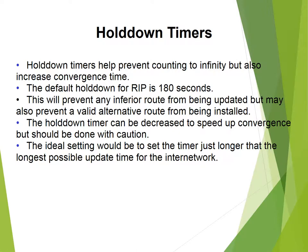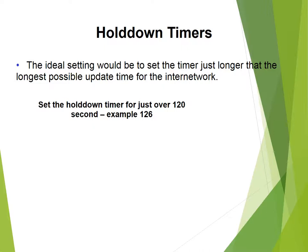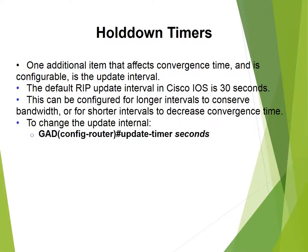The hold-down timer helps prevent counting to infinity but also increases convergence time. The default hold-down for RIP is 180 seconds, which prevents any inferior route from being updated but may also prevent a valid alternative route from being updated. The hold-down timer can be decreased to speed up convergence, but this should be done with caution. The ideal setting is to set the timer just longer than the longest possible update time for the network — just over 120 seconds is recommended. The default RIP update interval in Cisco IOS is 30 seconds, which can be configured for longer intervals to conserve bandwidth or shorter intervals to decrease convergence time.